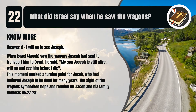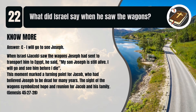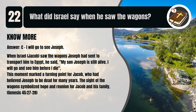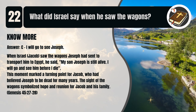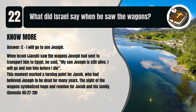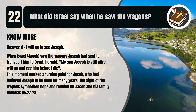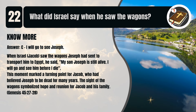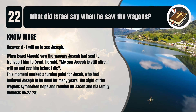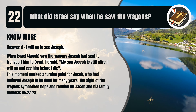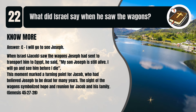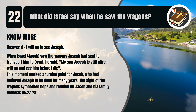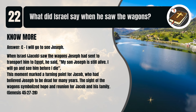That's C. I will go to see Joseph. When Israel, Jacob, saw the wagons Joseph had sent to transport him to Egypt, he said, 'My son Joseph is still alive. I will go and see him before I die.' This moment marked a turning point for Jacob, who had believed Joseph to be dead for many years. The sight of the wagons symbolized hope and reunion for Jacob and his family. Genesis chapter 45 verses 27 to 28.